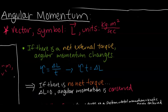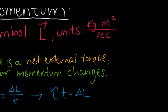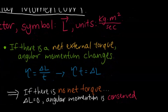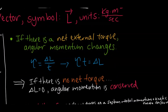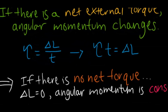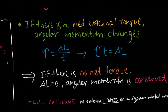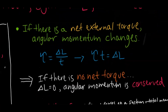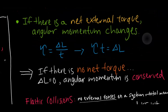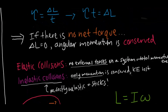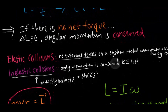The final topic is angular momentum. Similar to linear momentum, it is a vector. The symbol is L, with units of kg·m²/s. If there is no external torque, angular momentum is conserved — you can see that torque exerted over time equals the change in angular momentum. So if there's no torque, there's no change in angular momentum.